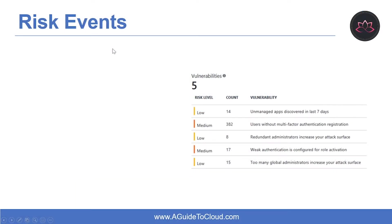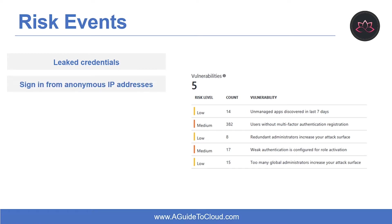Currently, Azure Active Directory detects six types of risk detection. The first is users with leaked credentials — when cybercriminals compromise valid passwords of legitimate users, they often share those credentials. The second type is sign-in from anonymous IP addresses, which identifies users who have successfully signed in from an IP address identified as an anonymous proxy IP address.